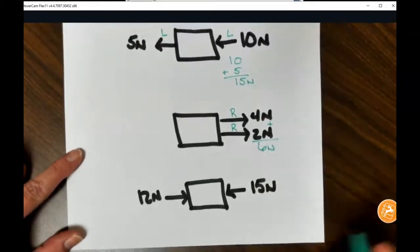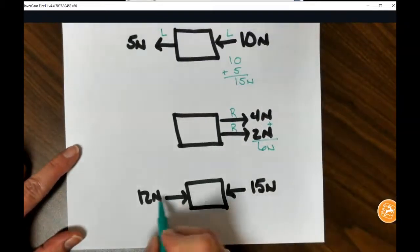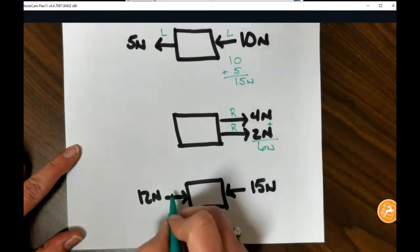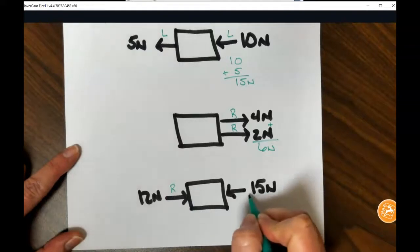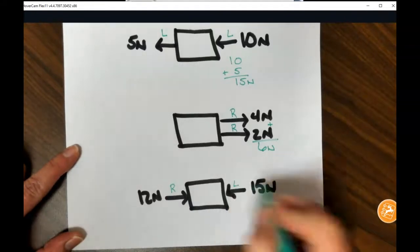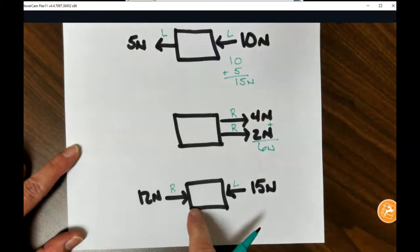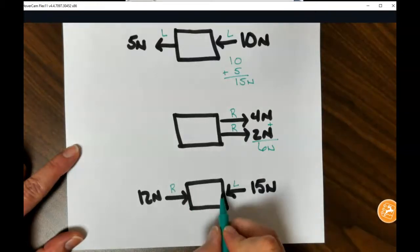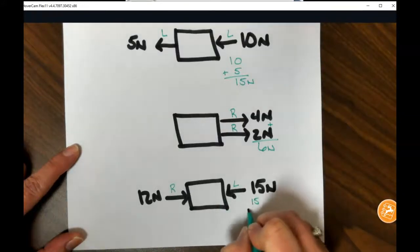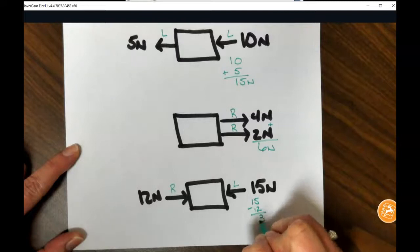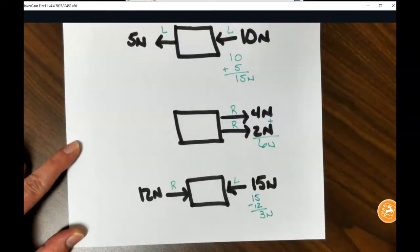In this last free body diagram, we see 12 newtons of force pushing the box to the right. We have 15 newtons of force pushing the box to the left. Sometimes people get confused when they're pushing the object. You need to look at the arrows carefully and label left and right. So because they're going in opposite directions, we would need to subtract them. So our net force is three newtons.